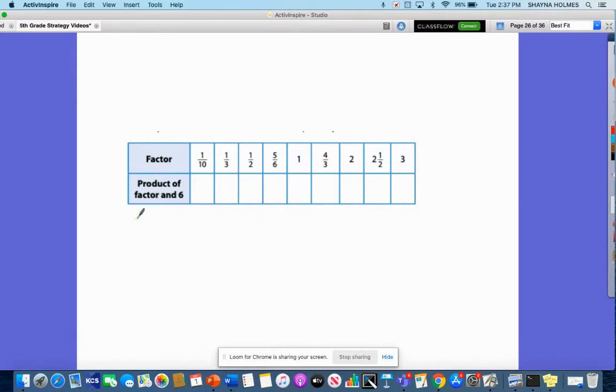And so we're going to actually be looking at a vocabulary word called scale factor. And so right down here are going to be all of our scale factors. So we're going to be multiplying six by a scale factor of one-tenth, one-third, one-half, five-sixths, one, four-thirds, two, two-and-a-half, and three.